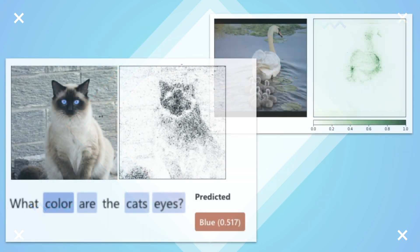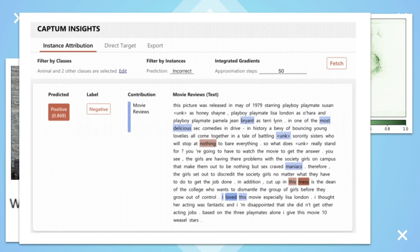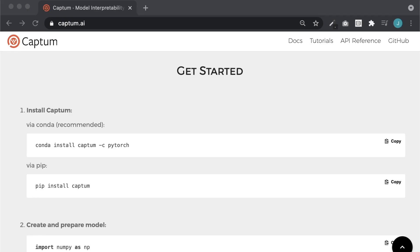Captum is considered multimodal, which means that it can be used for many different modes, such as images, videos, and text. For example, we can use it to analyze which words in this movie review were most important to predict that it is a positive review.